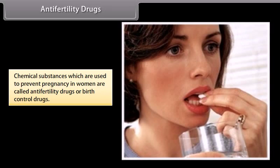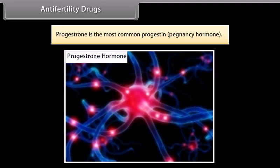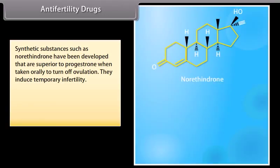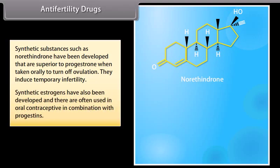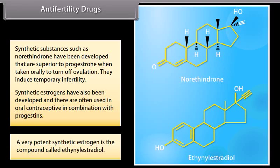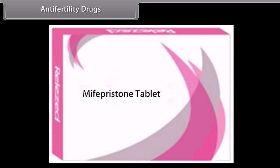Antifertility drugs: chemical substances used to prevent pregnancy in women are called antifertility drugs or birth control drugs. Progesterone is the most common progestin. Synthetic substances such as norethindrone have been developed that are superior to progesterone when taken orally to turn off ovulation, inducing temporary infertility. Synthetic estrogens are often used in oral contraceptives in combination with progestins. A very potent synthetic estrogen is ethinyl estradiol. Mifepristone is a synthetic steroid that blocks the effects of progesterone and is used as a morning-after pill in many countries.